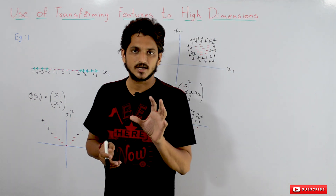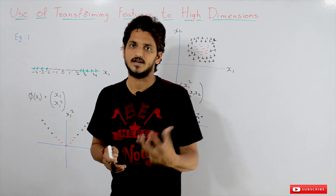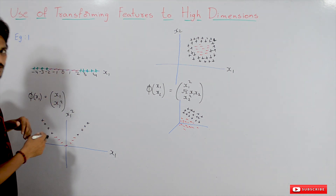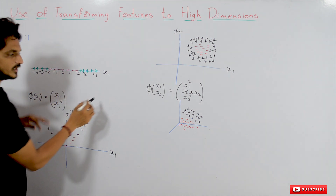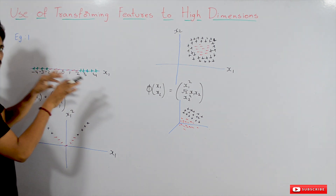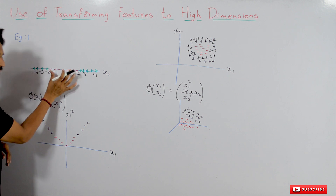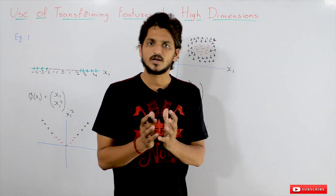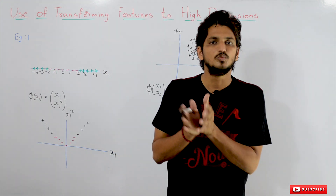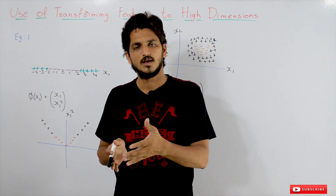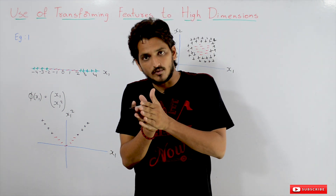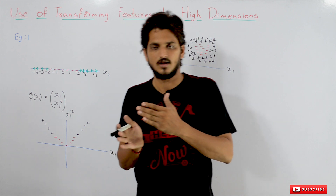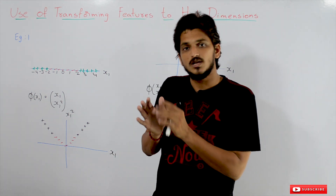Let's take an example. The dataset we consider here is a one-dimensional coordinate system, named x1. On this one-dimensional coordinate system we have some positive and negative points, with negative points in between the positive points. We discussed logistic regression and support vector machine in previous classes — the goal of both models is to separate positive and negative classes using a linear equation.